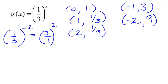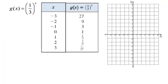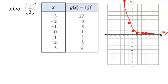Let's graph a few of these points. Negative 3 gives 27, which won't fit on this graph. Negative 2 gives positive 9. Negative 1 gives 3. 0 gives 1 — that's an important point in exponential functions. Then x equals 1 gives 1 third, so I barely go up. x equals 2 gives 1 ninth, and x equals 3 gives 1/27. So let's draw this curve, and that is the graph of g of x equals 1 third to the x.